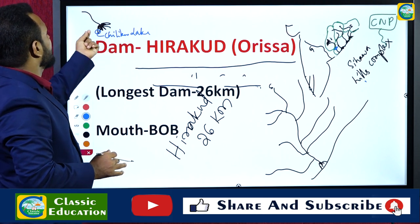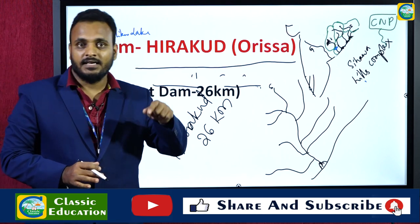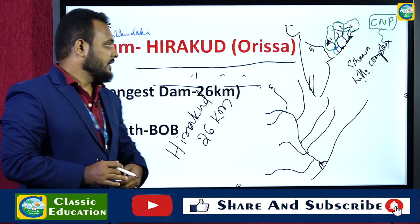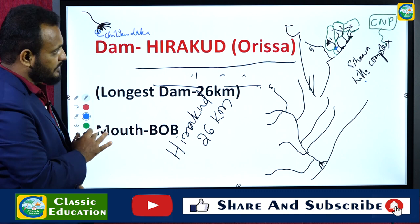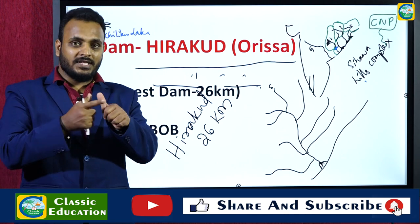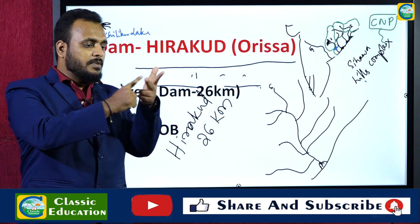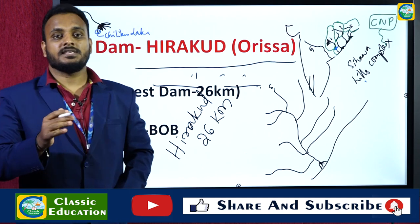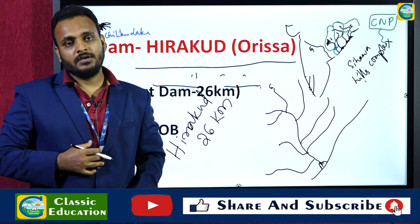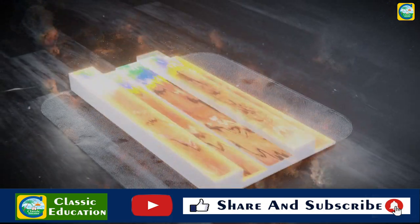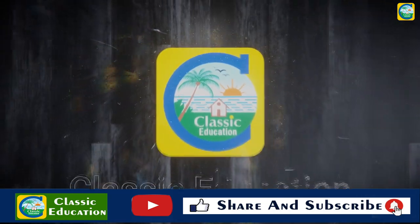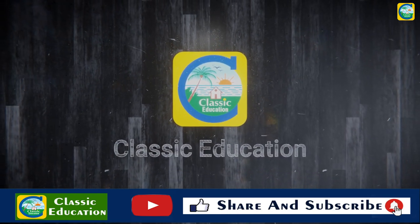This is the holistic picture of today's river systems — we covered Godavari, Subanareka, Brahmani, Baitani, and Mahanadi. We will continue this series of river systems tomorrow as well. Thank you, have a nice day.